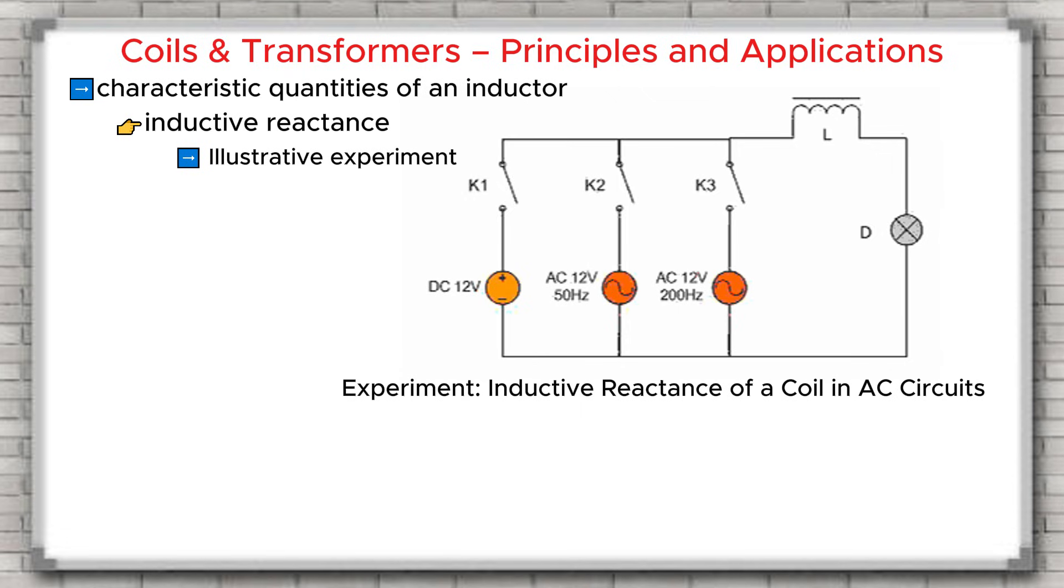Conclusion: The inductive reactance of a coil is proportional to the inductance of the coil and proportional to the frequency of the alternating current. This means the higher the frequency of the alternating current, the harder it is for the current to pass through the coil. And with direct current, the frequency F equals zero Hertz. Therefore, the inductive reactance ZL equals zero, and the current passes through the coil easily.